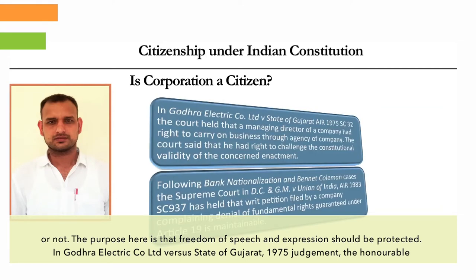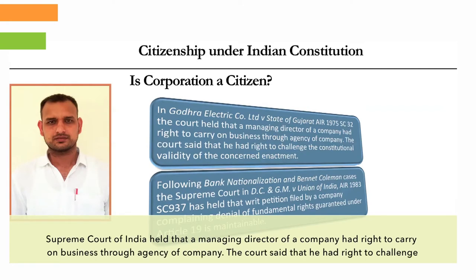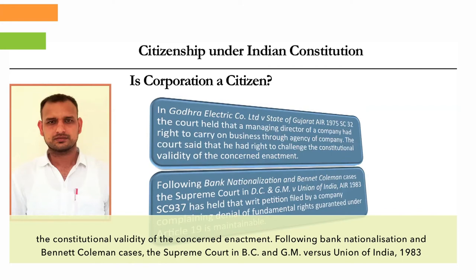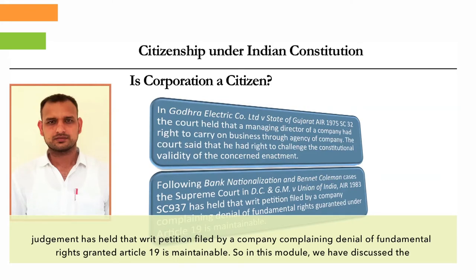In Godra Electric Company Limited versus State of Gujarat 1975, the Honourable Supreme Court held that a managing director of a company had the right to carry on business through the agency of the company and had the right to challenge the constitutional validity of the concerned enactment. Following the Bank Nationalization and Bennett Coleman cases, the Supreme Court in DC and GM versus Union of India 1983 held that a writ petition filed by a company complaining of denial of fundamental rights under Article 19 is maintainable.